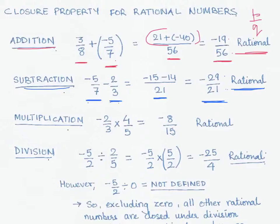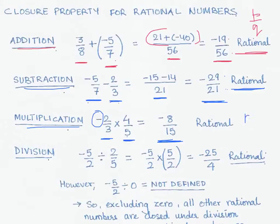Now let's look at multiplication. We multiply minus 2/3 by 4/5. This is similar to multiplying fractions, but we must take care of the negative sign. We multiply the numerators and denominators: minus 2 times 4 gives minus 8, and 3 times 5 gives 15, so the result is minus 8 by 15. This is again in the form of p by q with denominator 15, which is not equal to 0, hence it is a rational number.